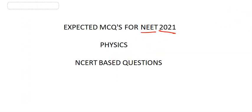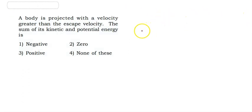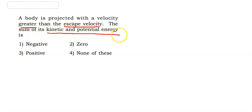Let's go to the first question. A body is projected with a velocity greater than escape velocity. What is the sum of kinetic and potential energy? There are four options: negative, zero, positive, and none of these.